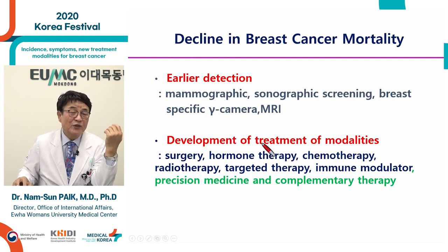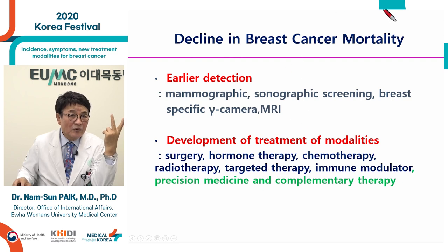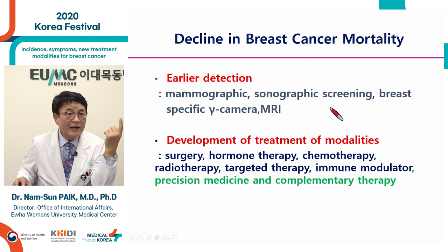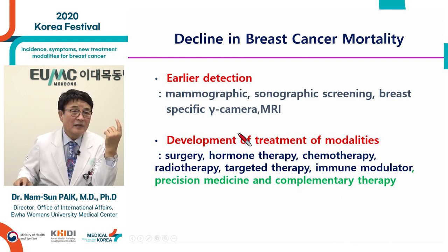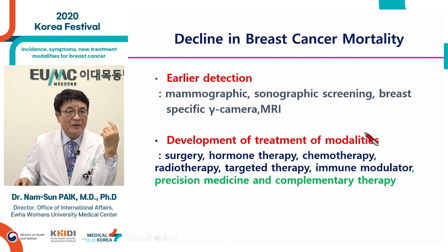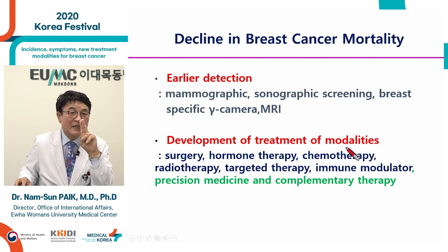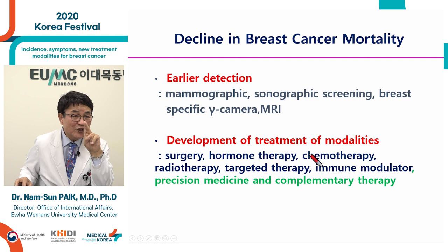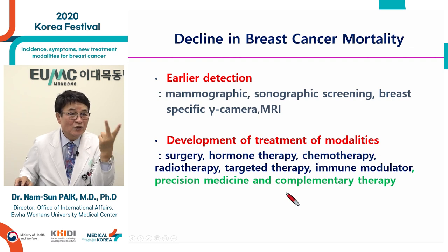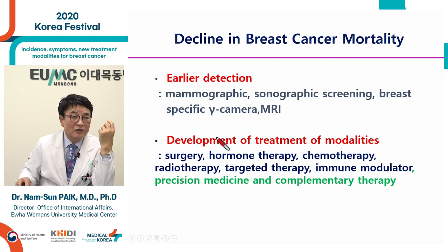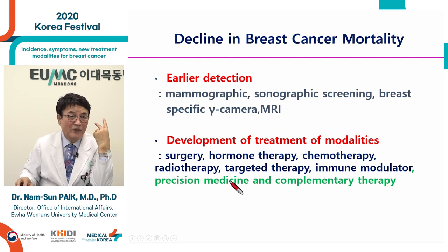After surgery, many factors guide treatment: hormone receptor positivity, HER2 positivity, and Ki-67 percentage — so-called precision medicine. Precision medicine also includes genetic factors. If there is an abnormal gene, we can remove it with CRISPR. This year the Nobel Prize was awarded for CRISPR, with two doctors receiving the laureate.